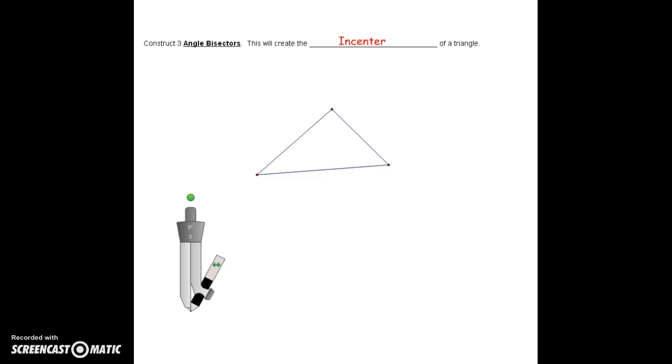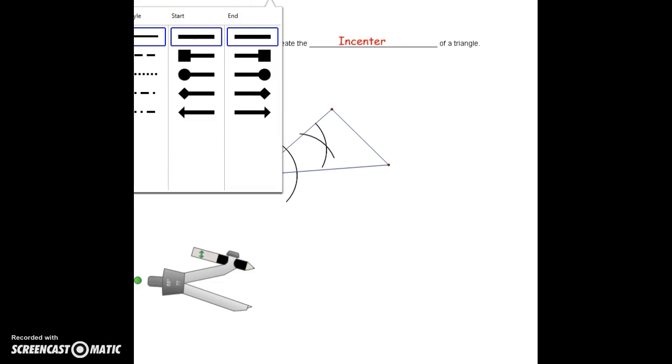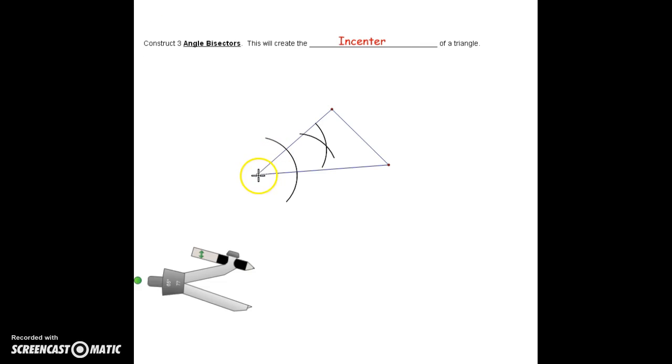The next one is constructing three angle bisectors on a triangle, which will create a point of concurrency where they all meet. This is called the incenter. I'm going to do the angle bisectors of each corner. This will get confusing and messy, so be very careful. Make the arc, go to the intersection, make another arc, go to the other intersection. The arcs will cross, and draw in your angle bisector.